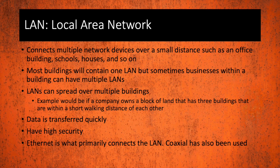A good example would be if a company owns a block of land downtown somewhere and they have two or three buildings that are within a short walking distance of each other. Data is usually transferred fairly quickly since everything is local. LANs typically have higher security as well. Ethernet is primarily what connects LANs, and coaxial cable has been used in the past as well.